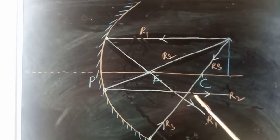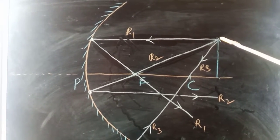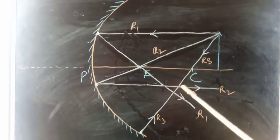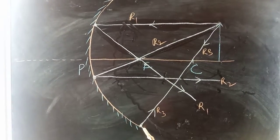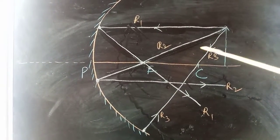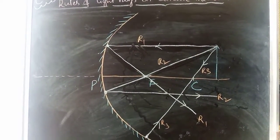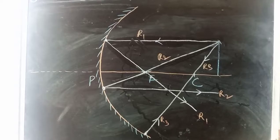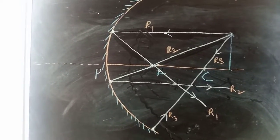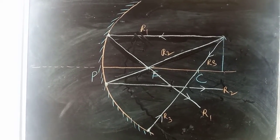The third ray from the tip of the object goes through the center of curvature, meets the concave mirror, and reflects back in the same path again. So these are the three rules of the concave mirror shown together. According to these three rules, the next video will show how images are formed in a concave mirror and the characteristics of the image.